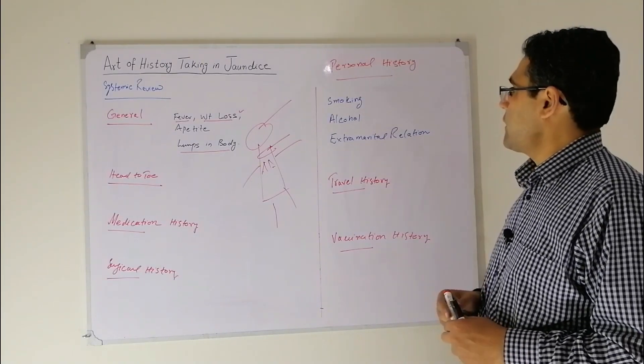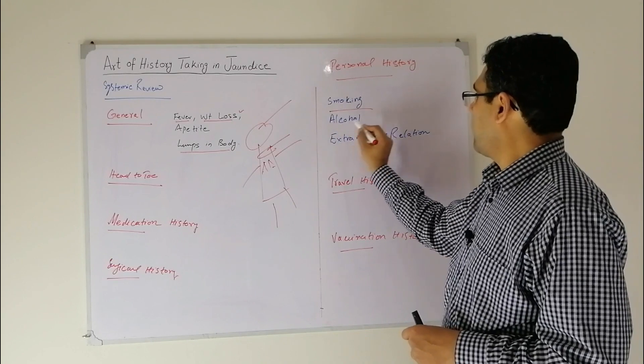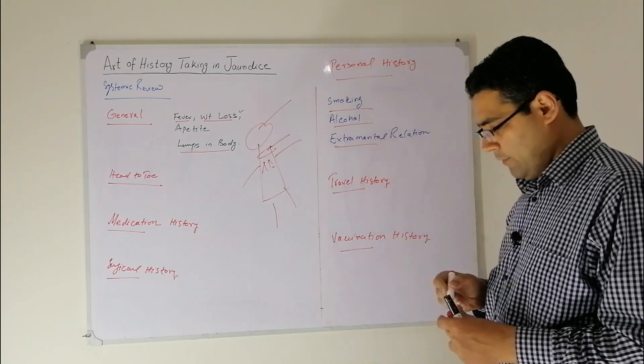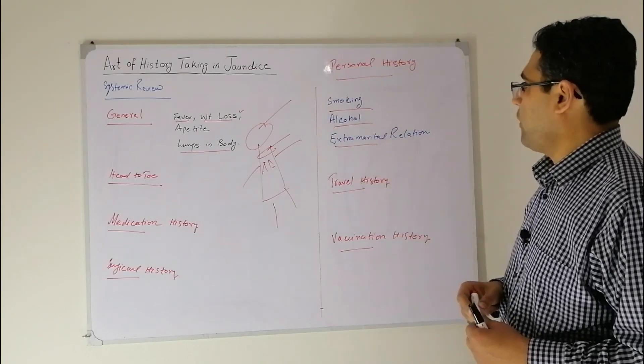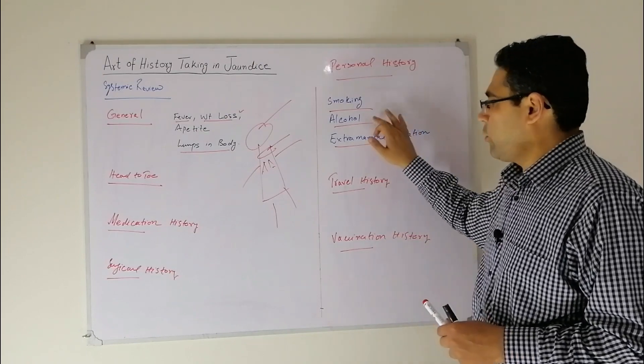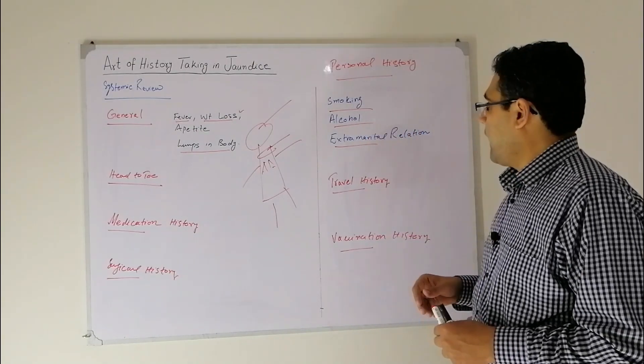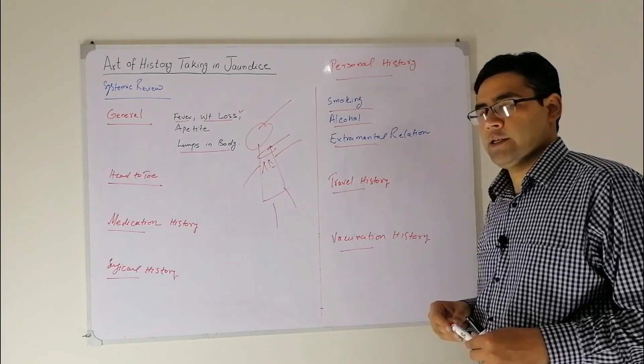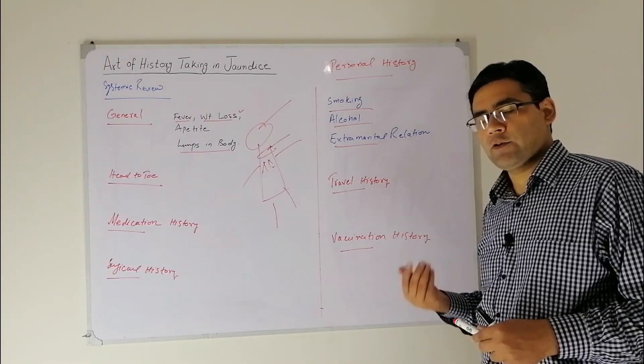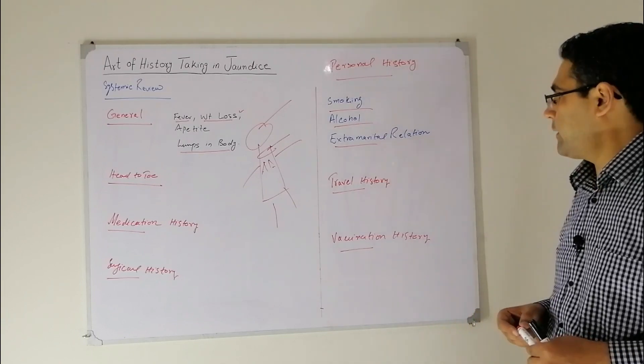Then comes the personal history. In personal history, smoking, alcohol, and extramarital relations are important. In case of alcohol, you will complete the CAGE questionnaire and then ask about extramarital relations which could be responsible for hepatitis.